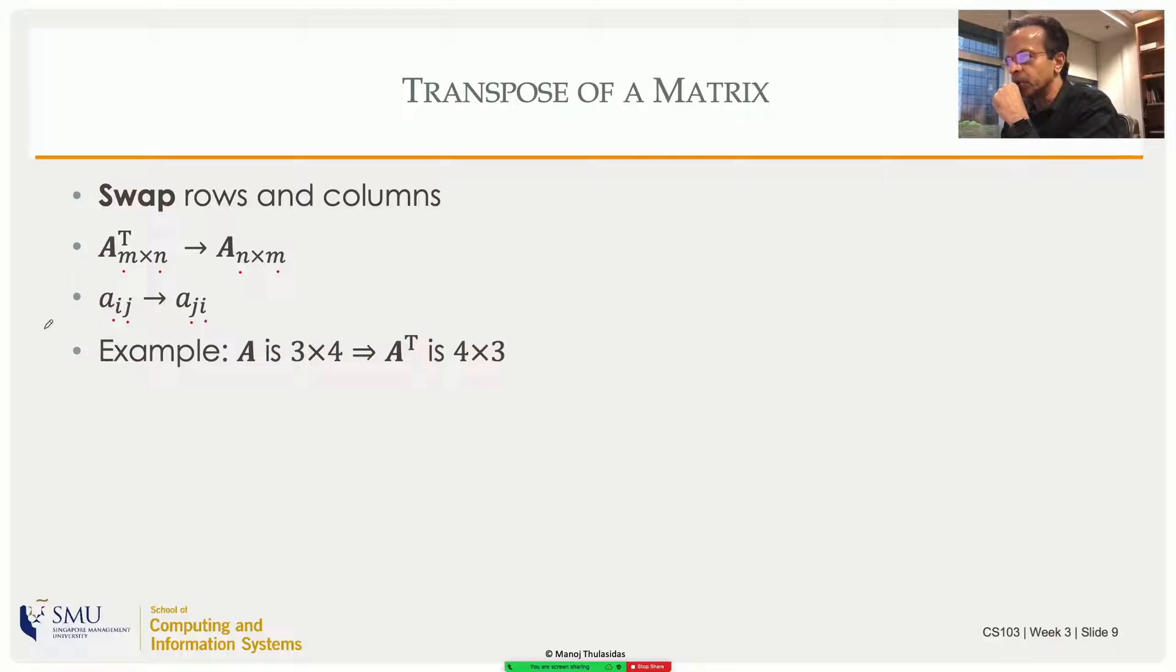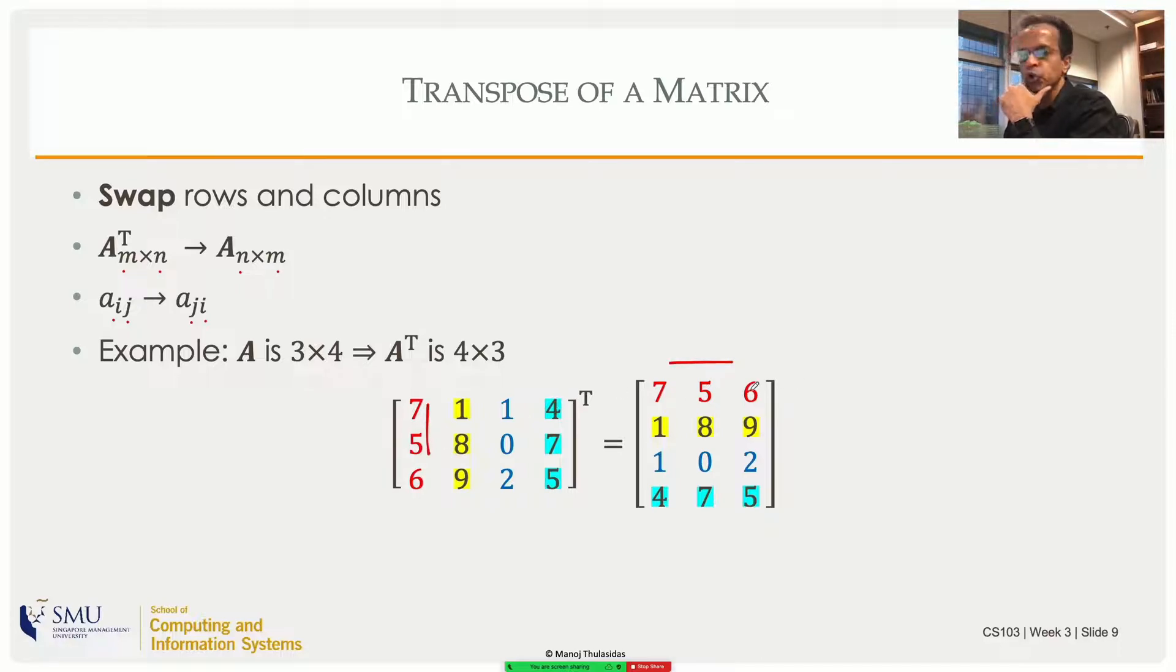Start with an example though. I have a 3 by 4 matrix, so 3 rows and 4 columns. Take the transpose, then I'll have 4 rows and 3 columns. 3 rows and 4 columns which are color-coded, and each column will become a row there. So the red one became a red row there.